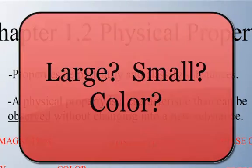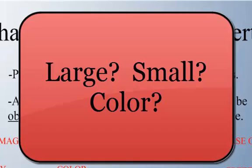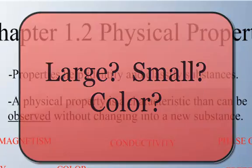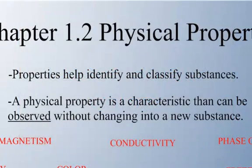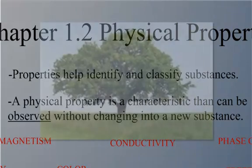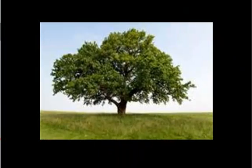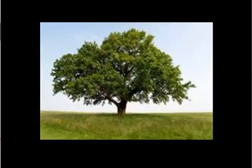When you were asking, is it large, is it small, what color is it — those are physical properties. A physical property is a characteristic that can be observed, and you're not changing it into a new substance. So if you're identifying a tree, you'll say it has green leaves, it has brown bark — you're talking about color.